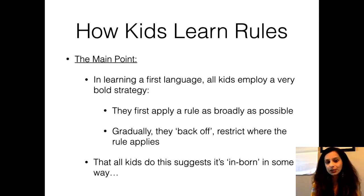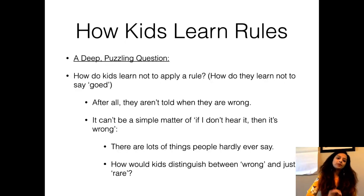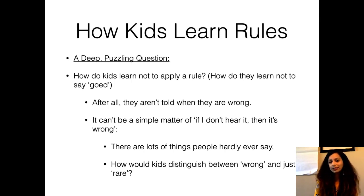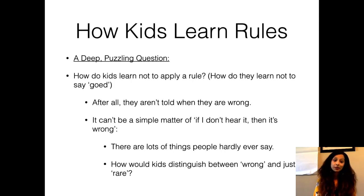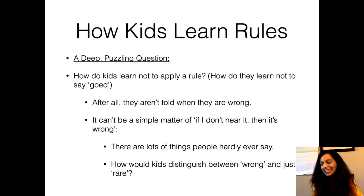The main point with respect to how kids learn rules is that they first apply a broad rule and then restrict the rule as they get more data and grow older. However, one puzzle remains without a good answer: how do kids learn not to apply a particular rule? For example, how do they learn that 'goed' is not a form of English? There is no way the child can hear this in their environment, and they may not be able to distinguish between what is wrong and what is just rare. This is an open-ended research question.